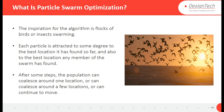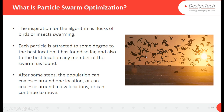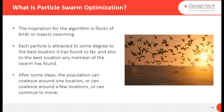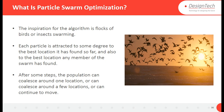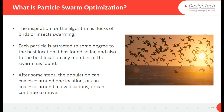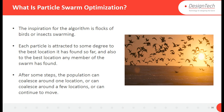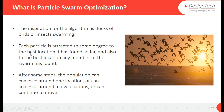The inspiration for the algorithm is flocks of birds or insect swarmings. If a single bird is able to find a destination, then other birds move towards that single bird and follow it. The same applies for insects — once one finds the destination and moves from the flock, the remaining ones follow. It can be a group or a sub-group from the flock as well.